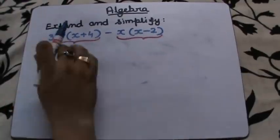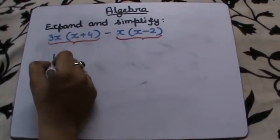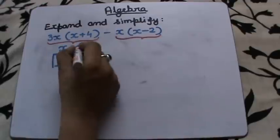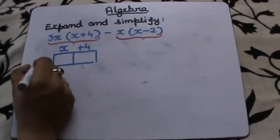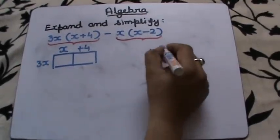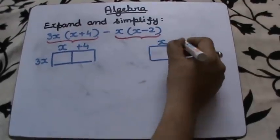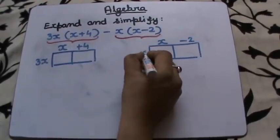So let's expand this one. This will be (x + 4) and here 3x, and this part will be (x - 2), negative x over here.